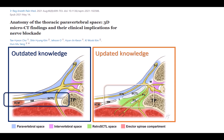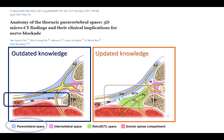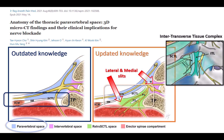What they've shown is that all the spaces that we target in the various posterior thoracic block techniques are connected by discrete anatomical pathways. The plane deep to the erector spinae muscle and its investing fascia is continuous with what they call the retro-SCTL, or the superior costal transverse ligament space, which in turn connects with the paravertebral space through openings in the musculoskeletal tissues that span adjacent transverse processes. The most prominent of these structures is the SCTL, which has traditionally defined the posterior border of the paravertebral space.